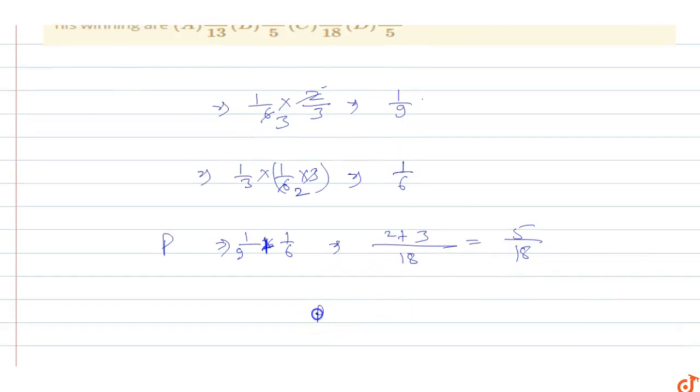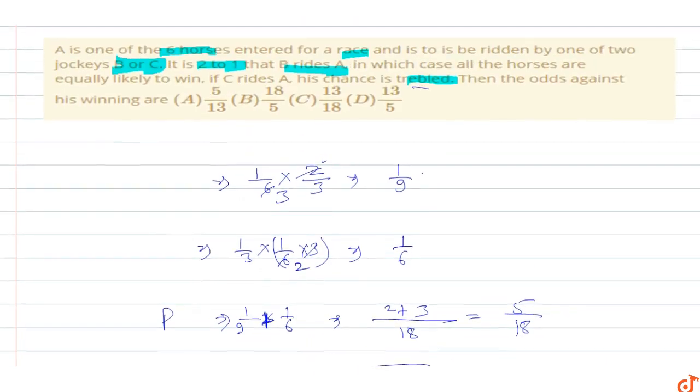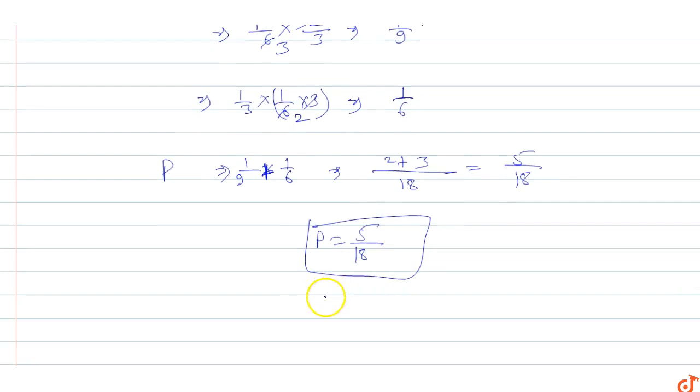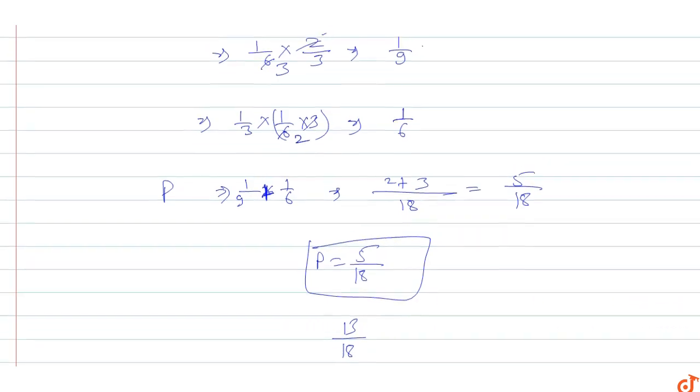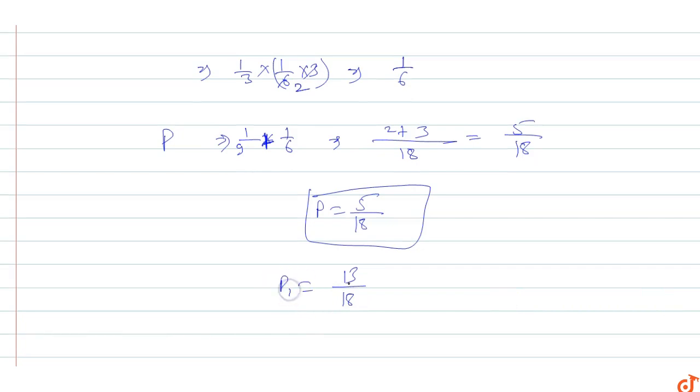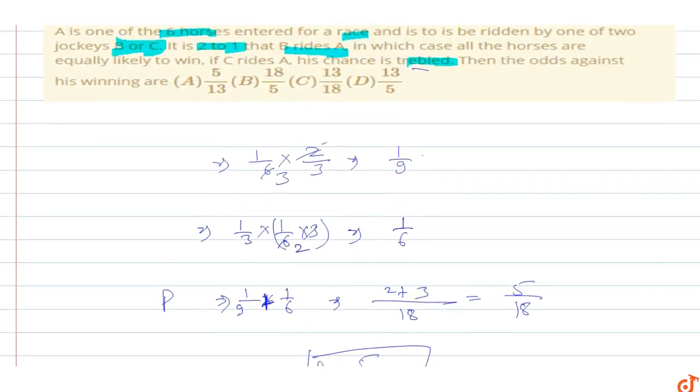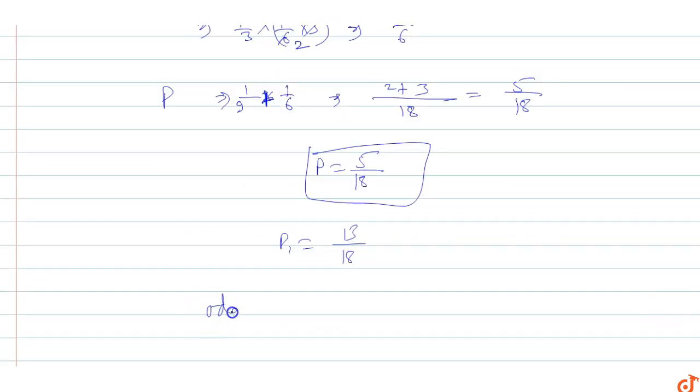This is the probability P which is the winning probability. Probability 1 minus P equals 13/18, which means the odds are 13 by 5.